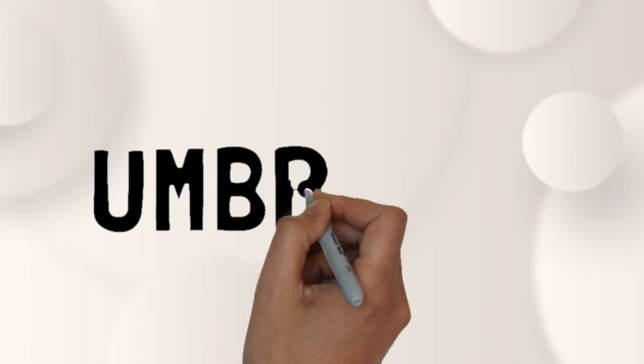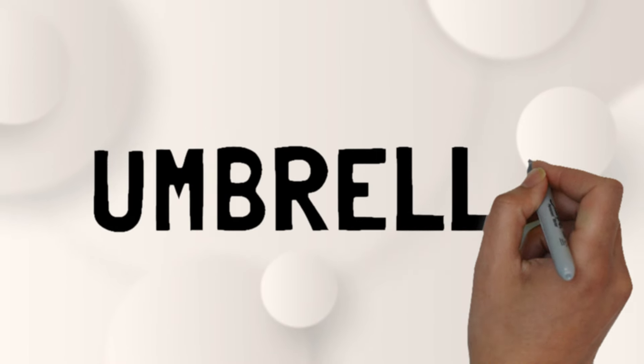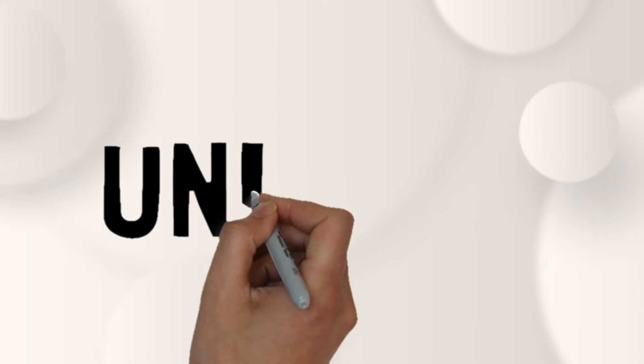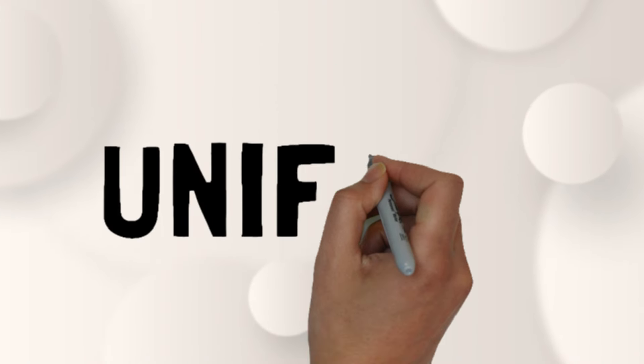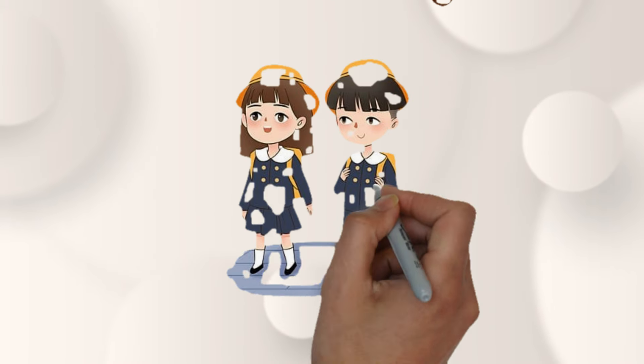U for U, M, B, R, E, L, L, A. Umbrella. U for U, N, I, F, O, R, M. Uniform.